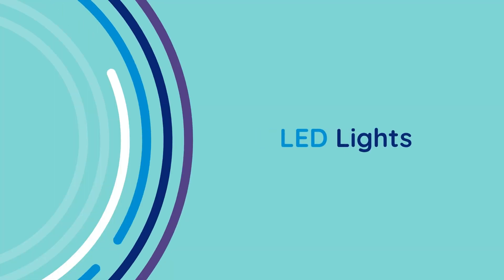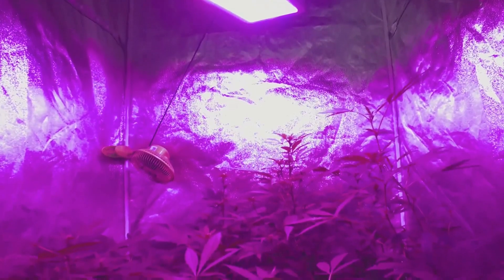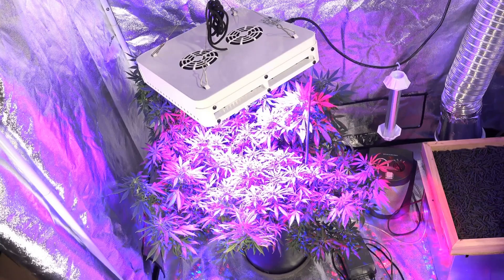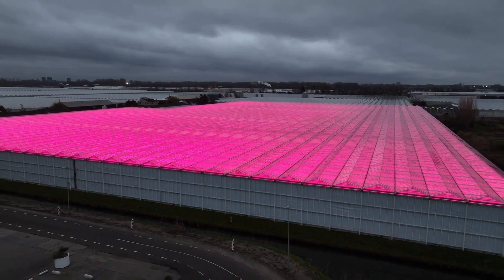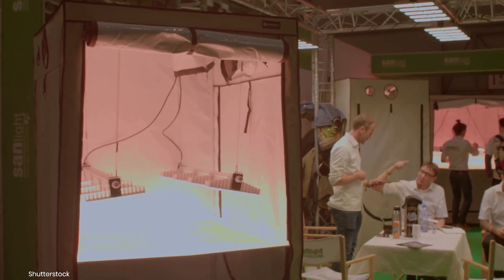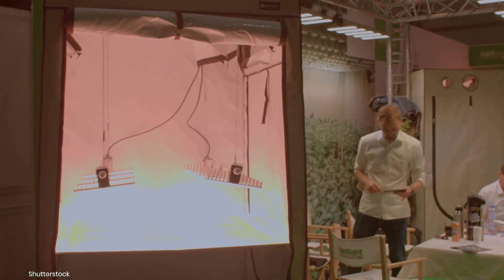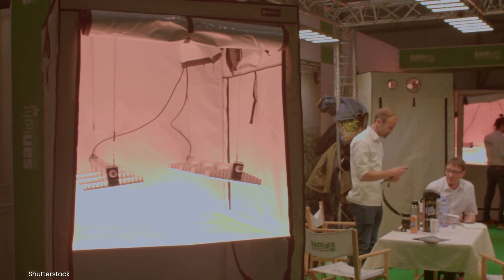LED lights represent a more modern approach to full-spectrum lighting and offer precise control over light quality and intensity. Unlike HPS and fluorescent lights, LEDs can be designed to emit a full spectrum of light, including ultraviolet (UV) and infrared (IR) wavelengths, allowing growers to tailor the light output to each stage of cannabis growth. LEDs are highly energy efficient, produce minimal heat, and have a long lifespan, making them a cost-effective and versatile option for both small and large-scale grows. Advanced LED systems can include features like cycle timers, dimming, spectrum switching, Wi-Fi, and programmable light cycles, providing growers with unparalleled control over their growing environment and maximizing plant health and yield potential.